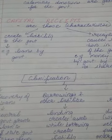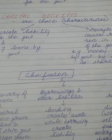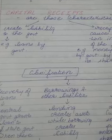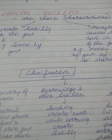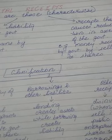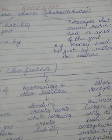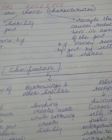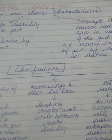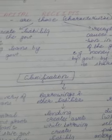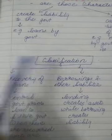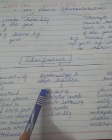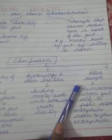Capital receipts have two characteristics. First, to create liability to the government. And the other, the government assets will be reduced. If these two cases are met, then it is a capital receipt. Broadly classified, capital receipts include: Recovery of Loans, Borrowings and Other Liabilities, and Other Receipts.